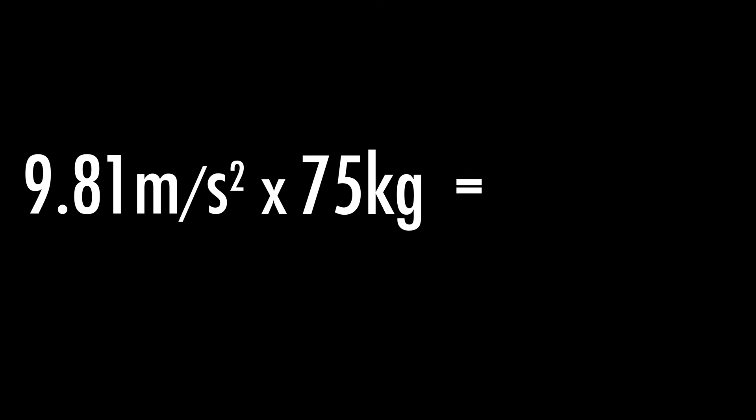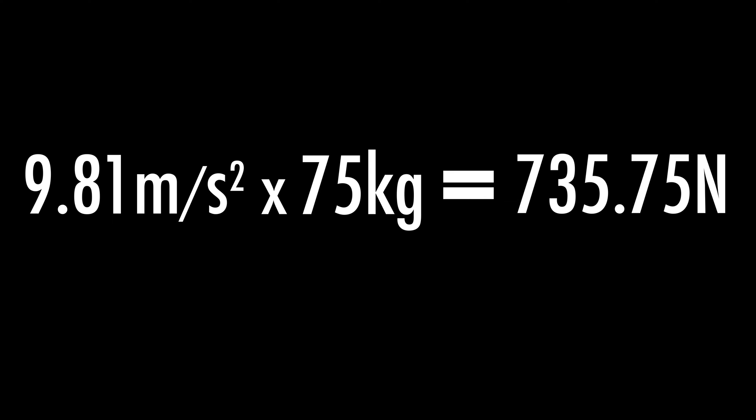Once the weight of water being pushed down is greater than the weight of the wakeboard and the wakeboarder, then you'll be able to stand up. We can actually try to do a rough calculation to see the minimum speed needed for me to get up on the wakeboard. First, we need to find the force of gravity pushing me down. We know the acceleration of gravity to be 9.81 meters per second squared, and if we assume the wakeboard and I together have a mass of 75 kilograms, that means we need to overcome a force of 735.75 newtons.